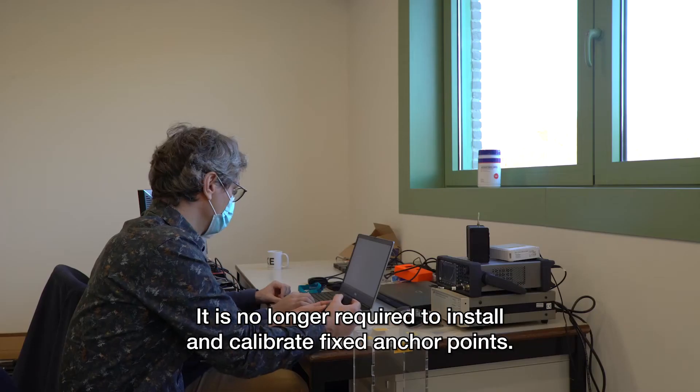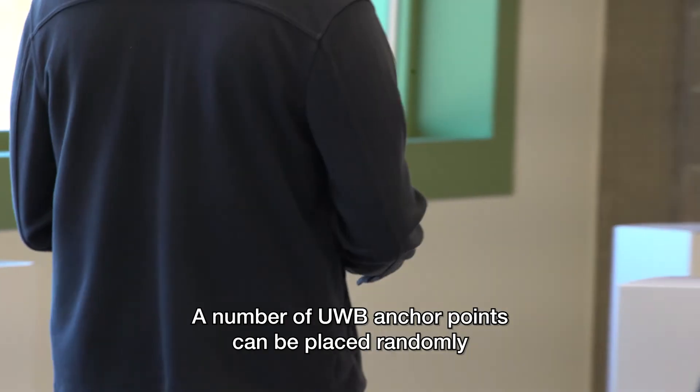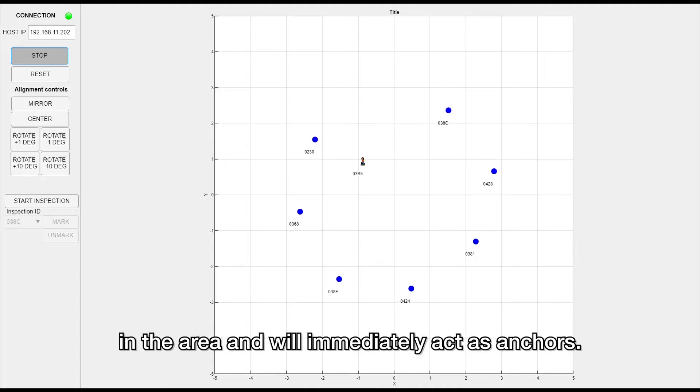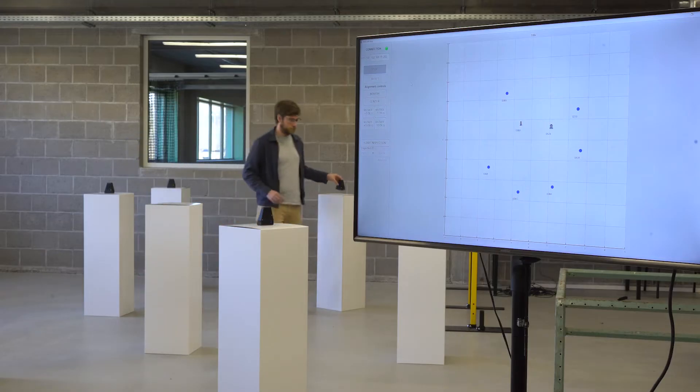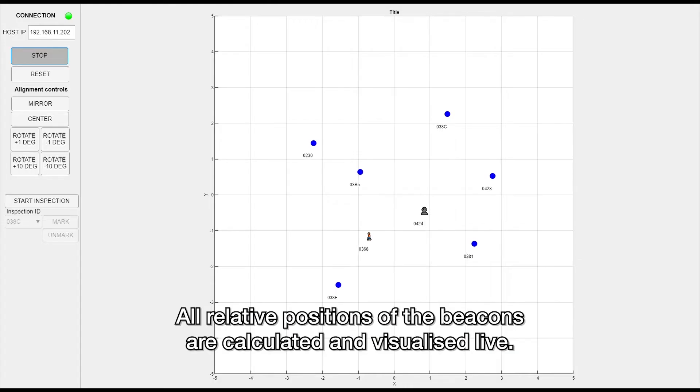It is no longer required to install and calibrate fixed anchor points. A number of UWB anchor points can be placed randomly in the area and will immediately act as anchors. All relative positions of the beacons are calculated and visualized live.